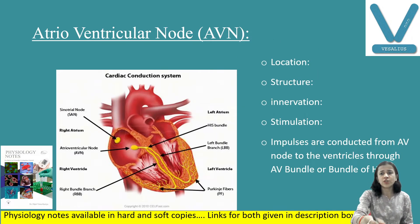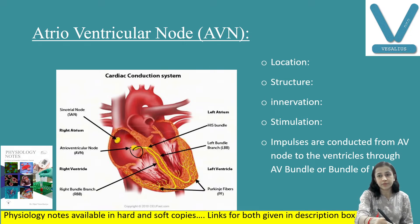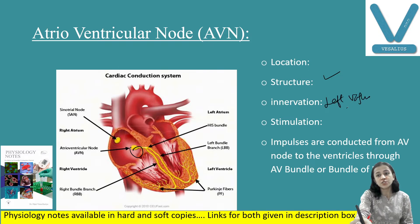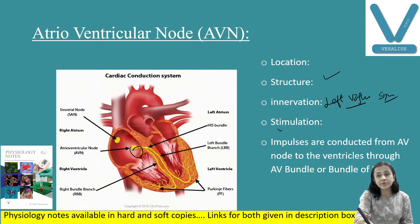The AV node is located on the posterior wall of the right atrium, on the right side of the interatrial septum, beneath the endocardium. Its structure is the same as the SA node. It is innervated by the left vagus nerve and also receives sympathetic nerve fibers from the left side. It is stimulated by the excitation wave that travels through the internodal track from the SA node.